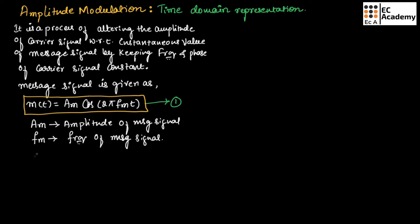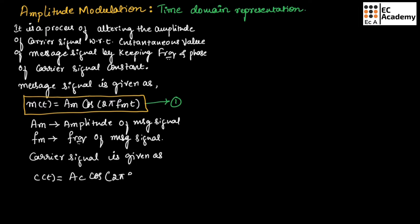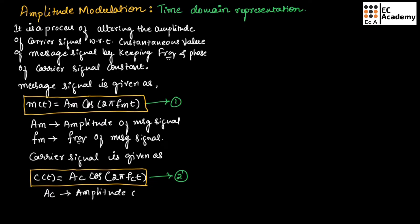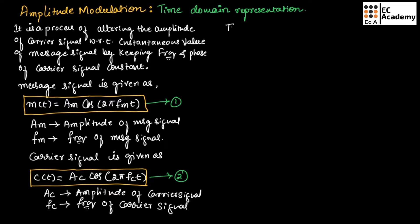The instantaneous value of the carrier signal is given as c(t) = ac·cos(2π·fc·t). Let us call this equation number 2. Here, ac is the amplitude of the carrier signal and fc is the frequency of the carrier signal.